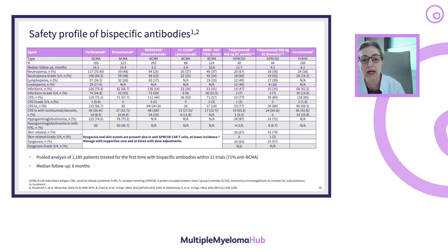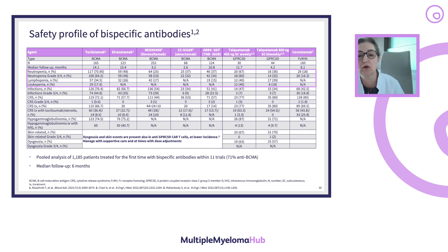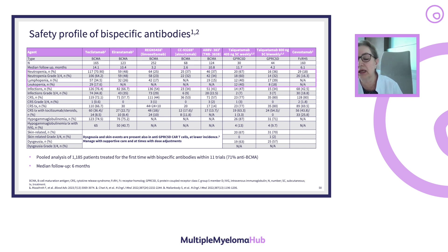The main comparison relies on cytopenias, seen on the fourth row. In grade 3-4, you can notice that Teclistamab is in the 60% range, while with Elranatamab it's almost half of the patients. It decreases with the Regeneron, Celgene, and AbbVie products, then goes up to 60% with Talquetamab given weekly, but drops to 30% when given biweekly. Lymphocytopenia is likewise a frequent finding, but not as much as neutropenia.